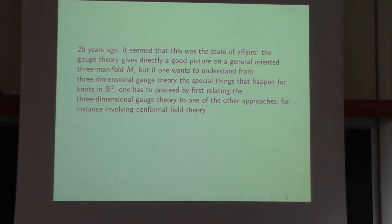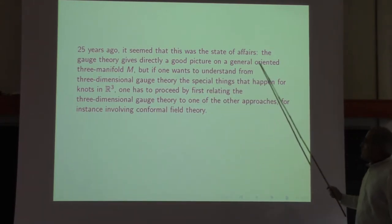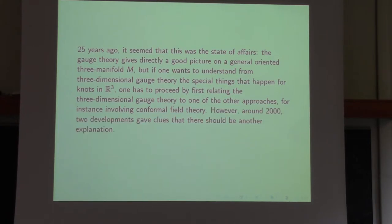The gauge theory gives what's believed to be the best answer if you want an invariant that only depends on an oriented three-dimensional M, maybe with an embedded knot. But for knots in R3, there is a generalization, and that generalization wasn't particularly clear in this explanation. Around the year 2000, two developments gave clues that there should be another explanation. One development involved string methodology, which I will leave for tomorrow. The other, beginning at roughly the same time, was the volume conjecture.